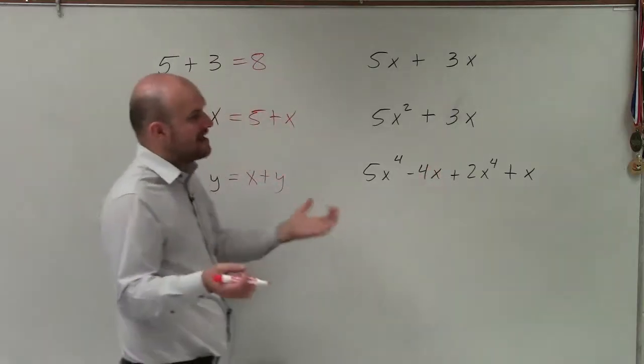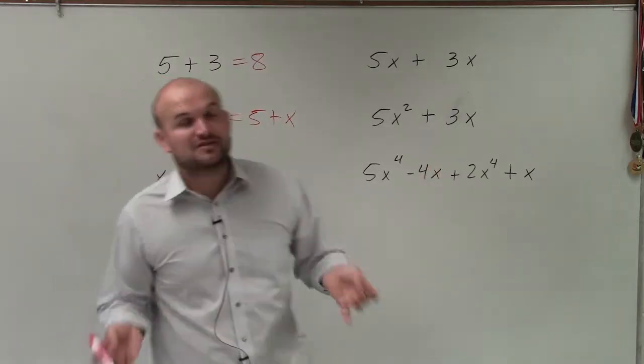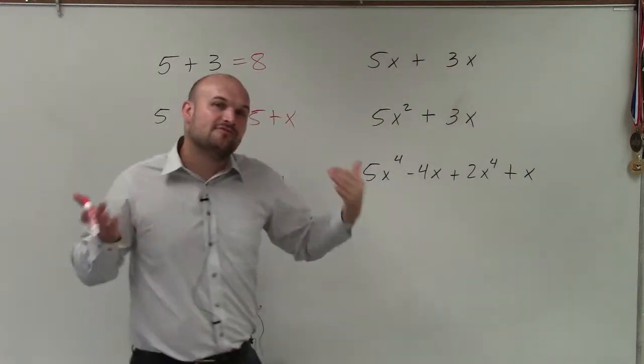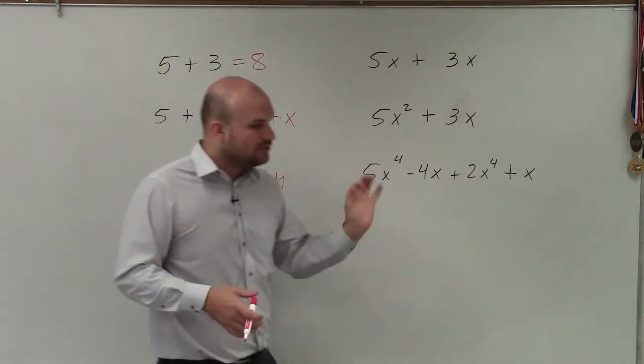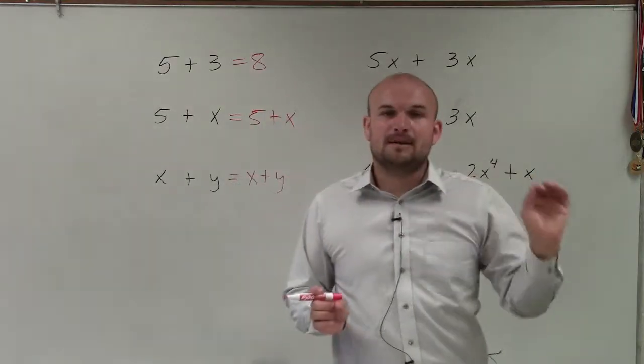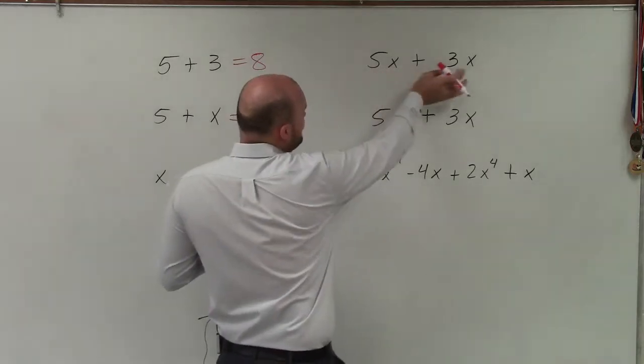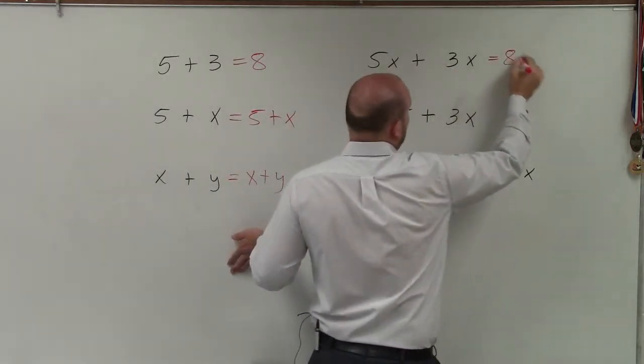When you look into, like, factoring x, you can see that the variable factors of x are just x and 1. So therefore, both of these terms have the same variable factors. Therefore, I can combine them. Now, when you combine them, we're only going to combine the coefficients. We're going to keep the variable factor the same. So 5x plus 3x is equal to 8x.